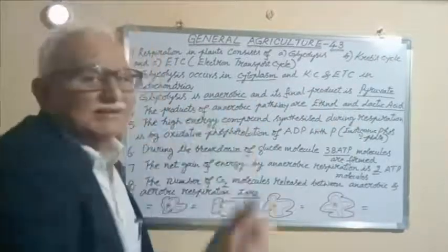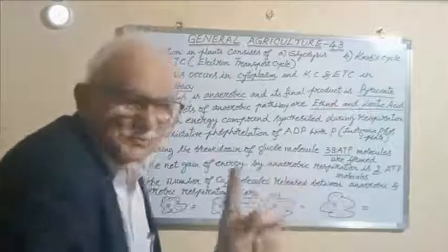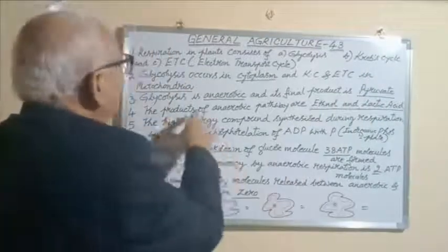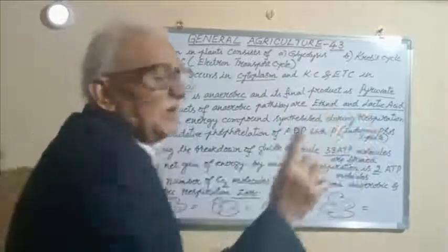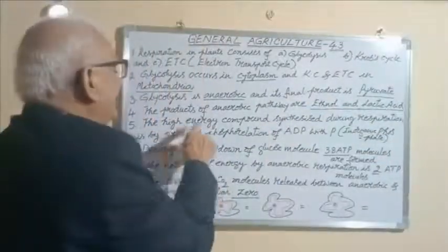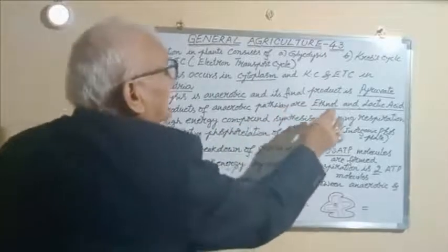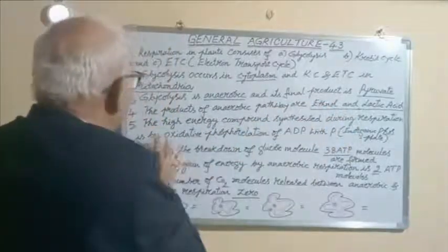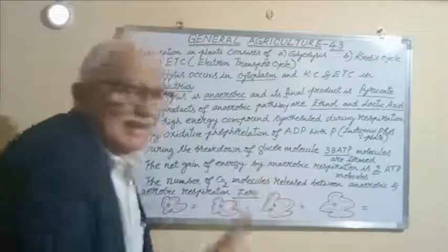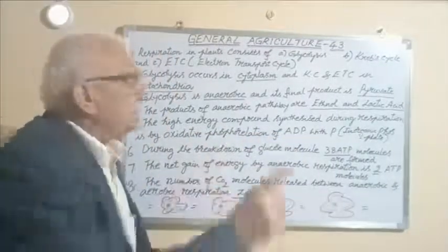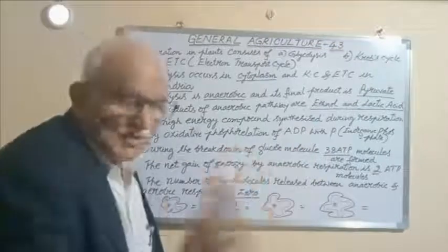The products of anaerobic pathway are ethanol and lactic acid. The high energy compound synthesized during respiration is by oxidative phosphorylation of ADP with inorganic phosphate.